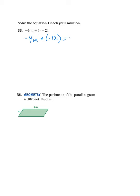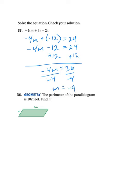And, all of that is going to equal 24. So, I could rewrite this as negative 4M minus 12 equals 24 if I want to. I'll add 12 to each side. I get negative 4M equals 36. And, then I'll divide by negative 4 to get M equals negative 9.